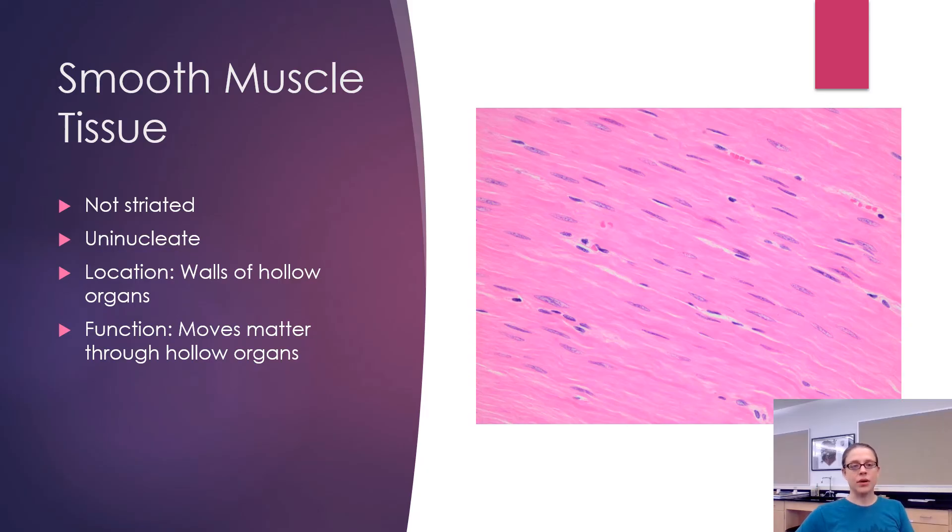The last type of muscle tissue is smooth muscle tissue. It's called smooth muscle because it's not striated. There are no dark and light bands. Also, like cardiac muscle, it's uninucleate. But you can differentiate it pretty easily because you do not see any striations. You don't see any intercalated discs. You find smooth muscle on the walls of hollow organs. It's a type of involuntary muscle that allows your body to move matter inside of the hollow organs. For example, it allows your body to move food through your intestines.